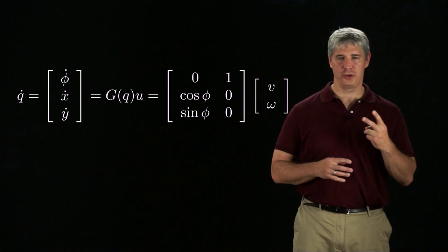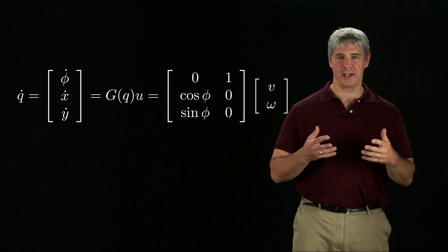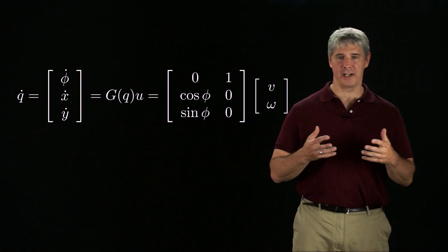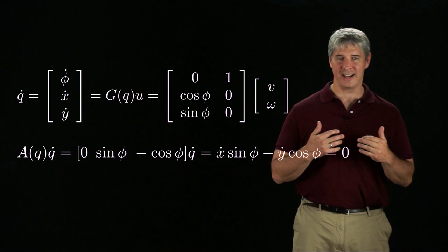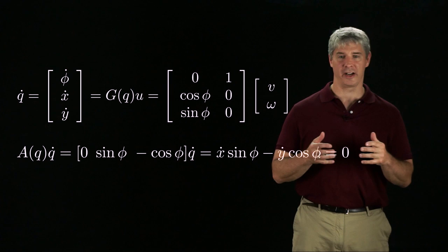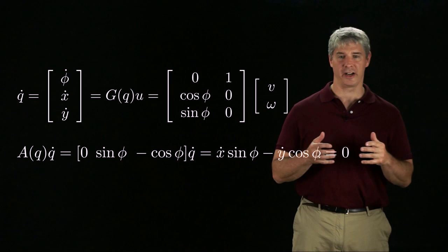The canonical model says we have a two-dimensional set of velocities for the 3 degree of freedom system. With a little manipulation, we get the implicit Pfaffian constraint on the velocities: x dot sine phi minus y dot cosine phi equals zero. Since this velocity constraint cannot be integrated to a constraint on the configuration of the robot, it's called a non-holonomic constraint, as we learned in Chapter 2. The presence of this constraint is why we call these robots non-holonomic.